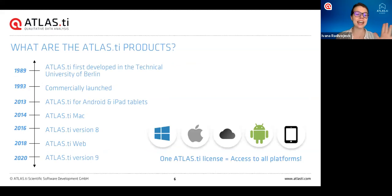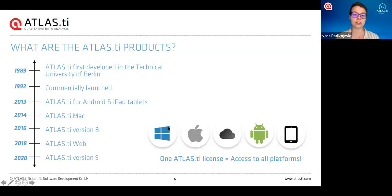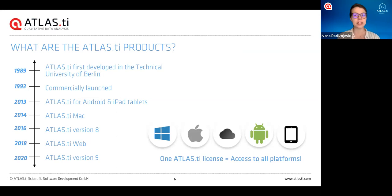Today we're going to be seeing Atlas TI version 9, our latest generation of the software. Atlas TI has been around for many decades now. If you get an Atlas TI license for version 9, you'll have access to all of our platforms — we have Atlas TI for Windows and Mac, and these have 100% compatibility between them. So you can even move projects back and forth, or if you work in a team with a mix of computers, you can certainly count on Atlas TI.